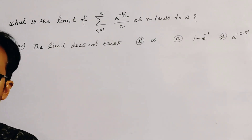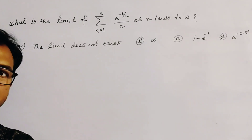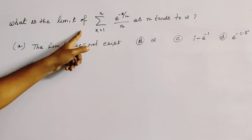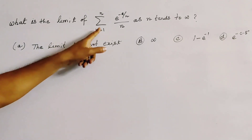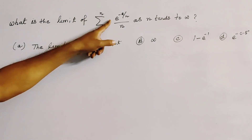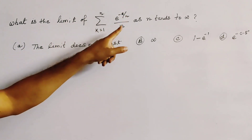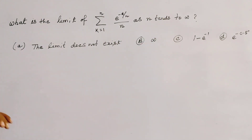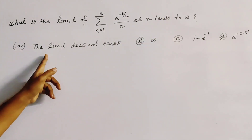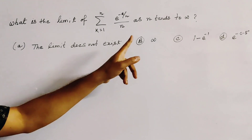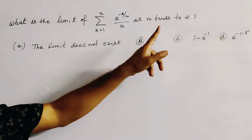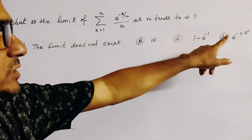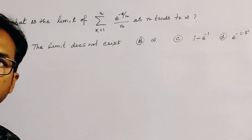Only one correct answer type MCQ: What is the limit of summation k equal to 1 to n of e to the power minus k by n, divided by n, as n tends to infinity? Four options are given: the limit does not exist; infinity; 1 minus e to the power minus 1; and e to the power minus 0.5.